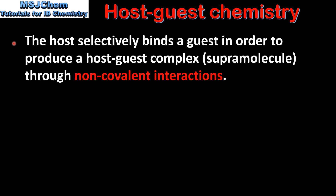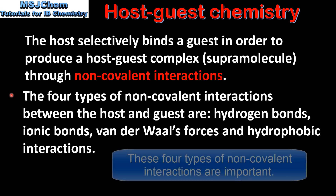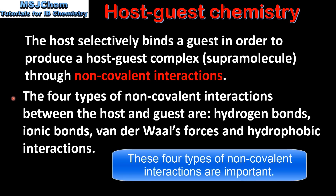The host selectively binds a guest in order to produce a host-guest complex, which is also called a supramolecule, through non-covalent interactions. The four types of non-covalent interactions between the host and guest are hydrogen bonds, ionic bonds, van der Waals forces, and hydrophobic interactions.